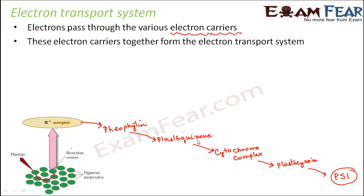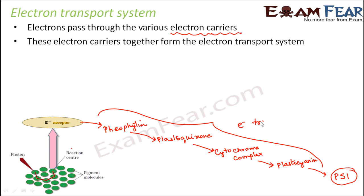All these molecules are protein structures and all of them act as electron carriers. By none of these molecules are electrons absorbed. So all these electron carriers together form the electron transport system, or the electron transport chain — this is the entire electron transport chain.